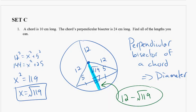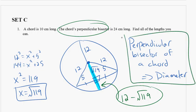So I think those are all the lengths we can find. But again, the big idea here is that when we have a chord's perpendicular bisector, a segment that bisects the chord and is perpendicular to it, we know that segment has to be the diameter of the circle.